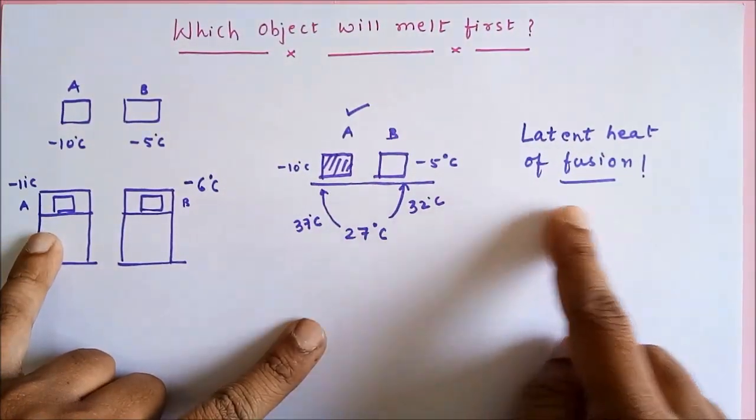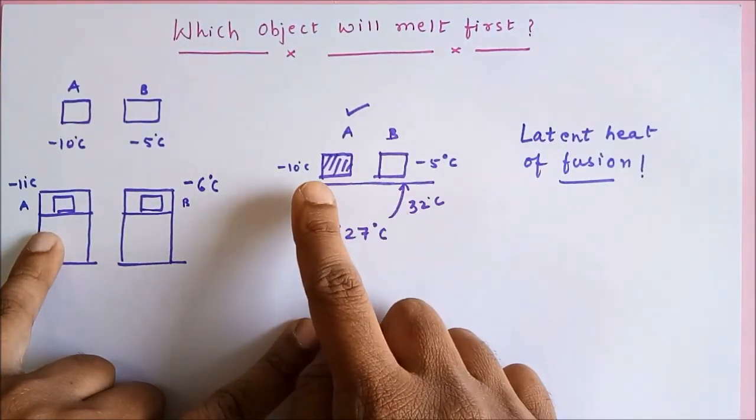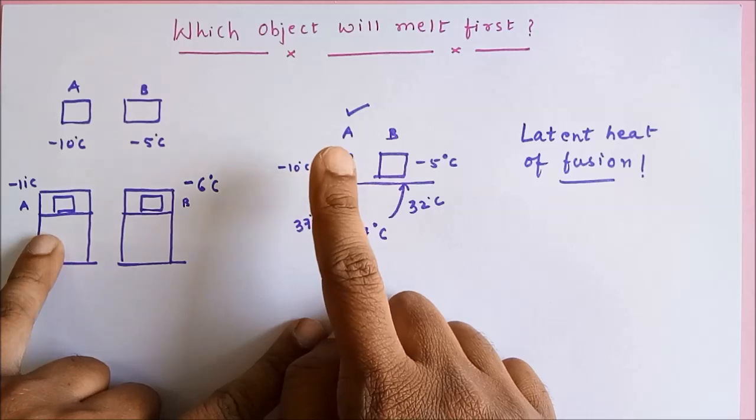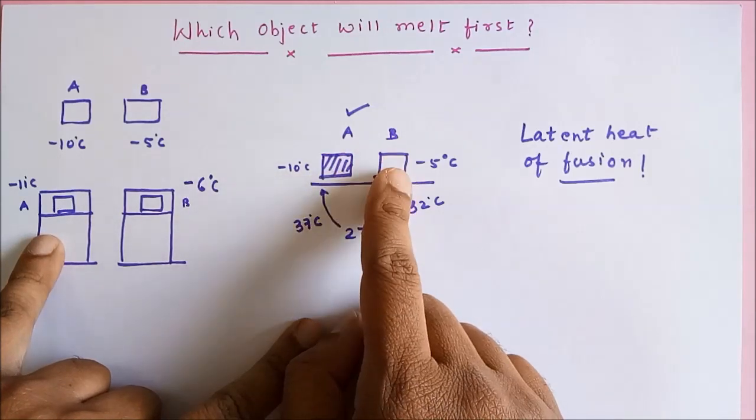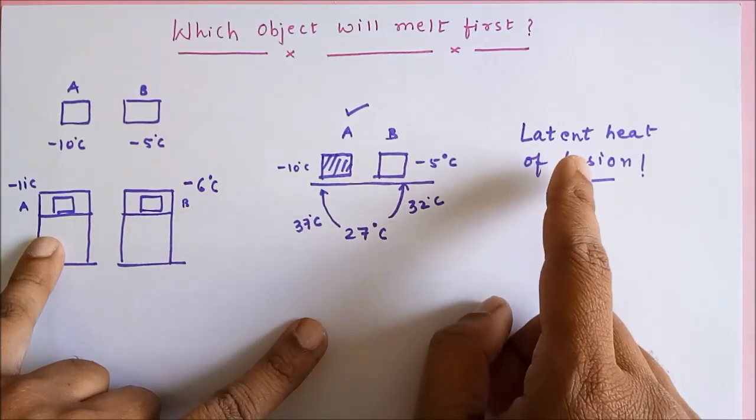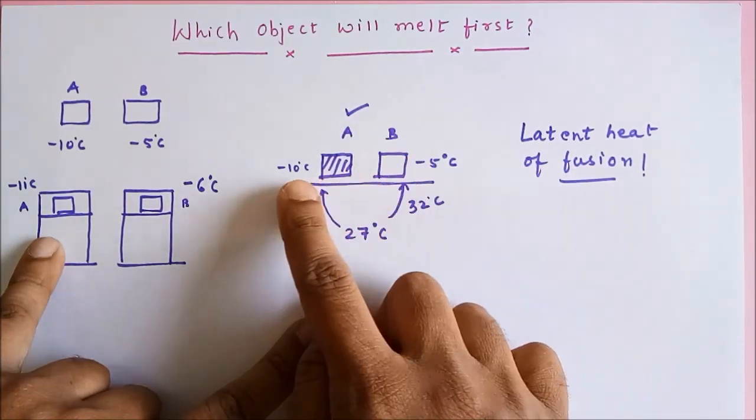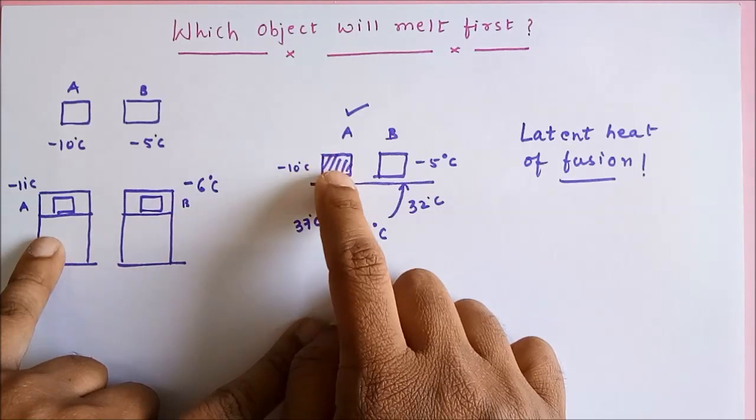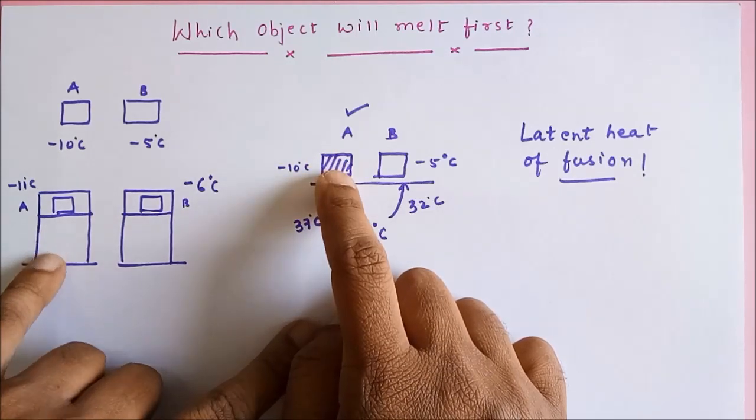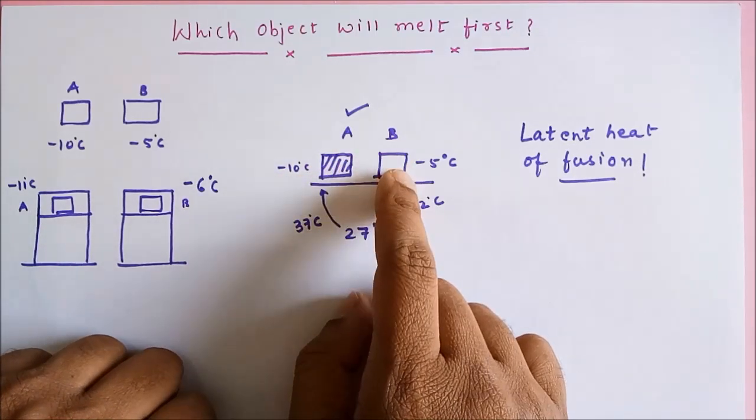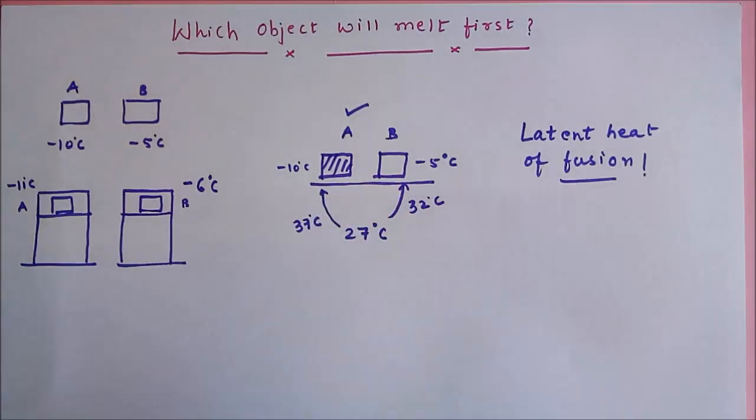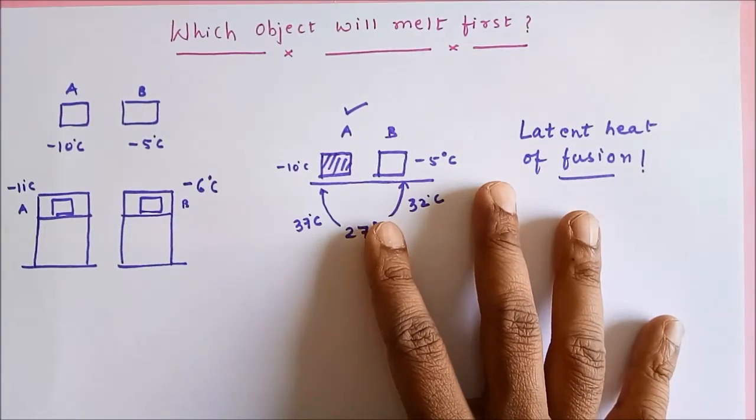But if we consider this fact, then we need perfect data: what is the latent heat of A and what is the latent heat of B? If the latent heat of A is very much larger than the latent heat of B, then even though the melting point is less, A would require more time to melt compared to B.